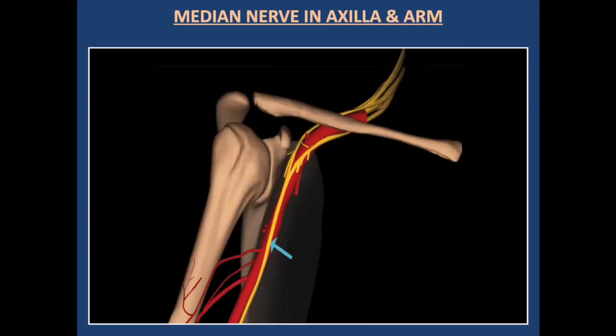This diagram shows the median nerve in the axilla and in the arm. We can see the median nerve is lateral to the axillary artery in the axilla, then it moves to the lateral side of the brachial artery, comes in front of the artery, and at the mid-humeral position it occupies the medial position.